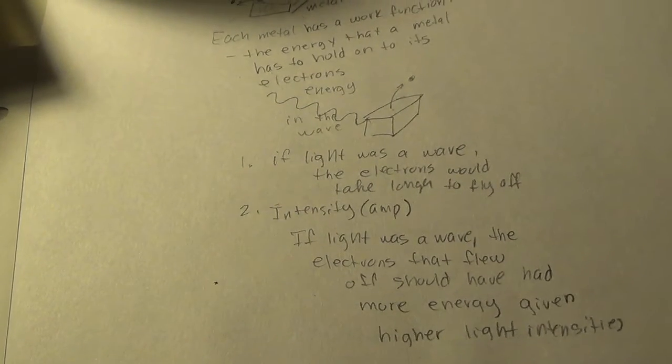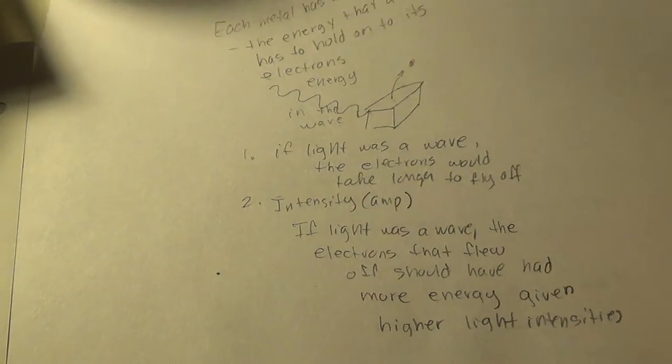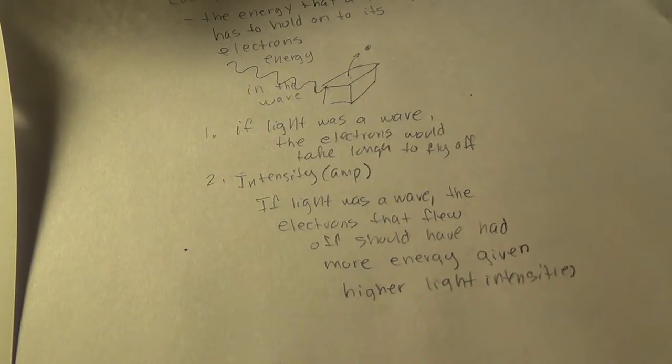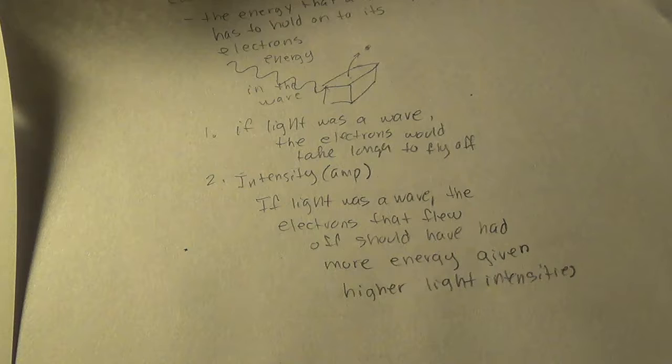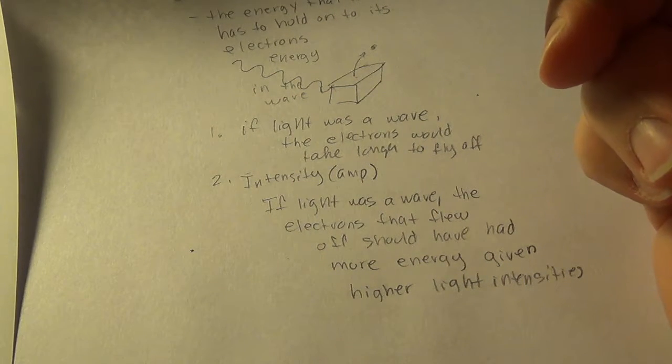The electrons that flew off should have had more energy given higher light intensities. And it's not, it's okay, even if we don't quite understand this. It's what we're trying to do to show that there were some inconsistencies with the thought that light is a wave. Well, number three, it's that each metal has a unique cutoff frequency.